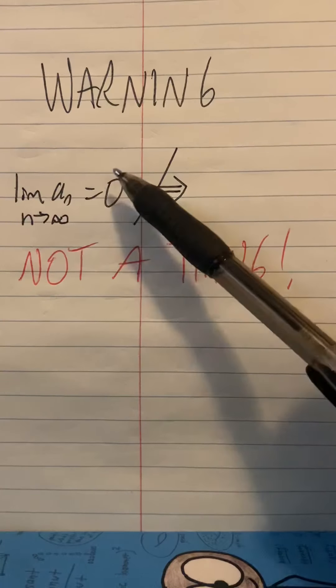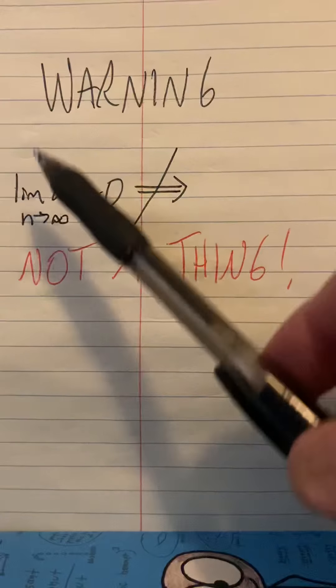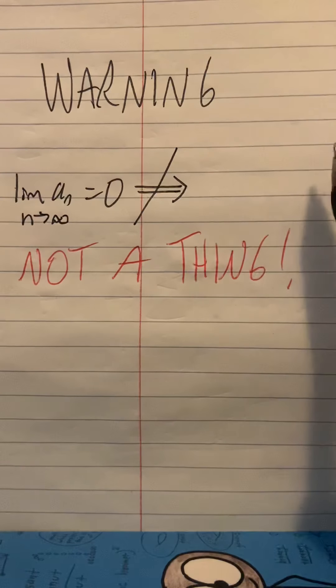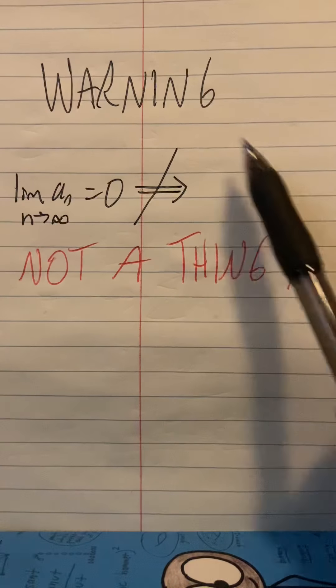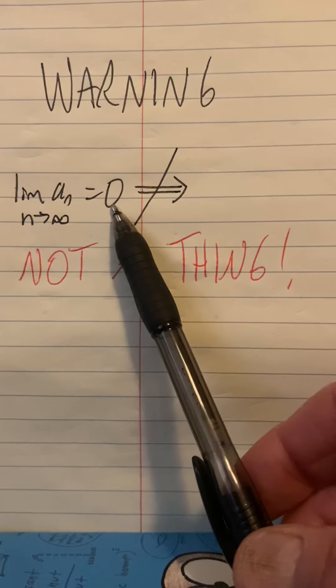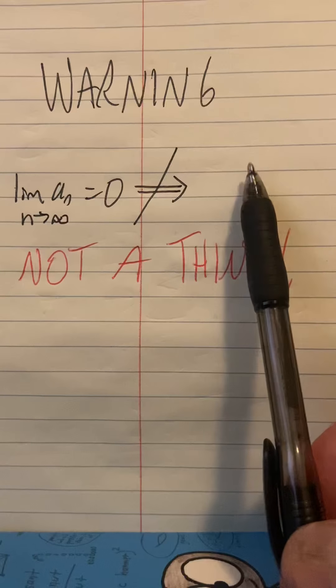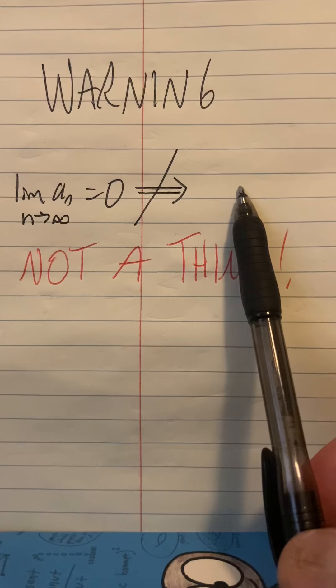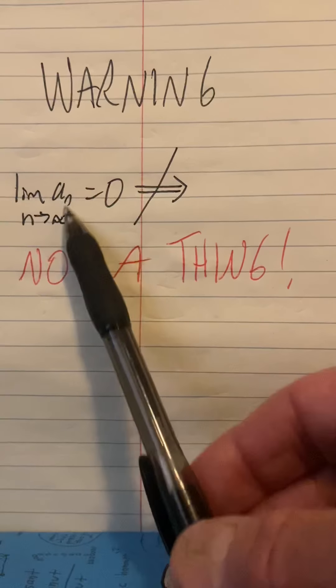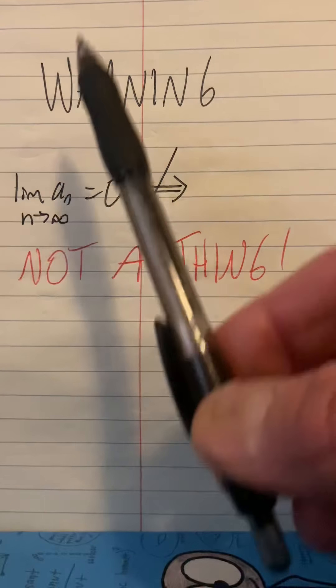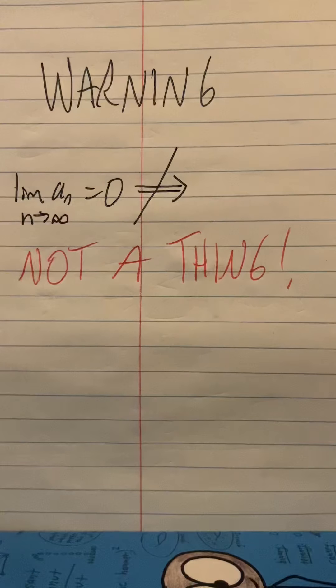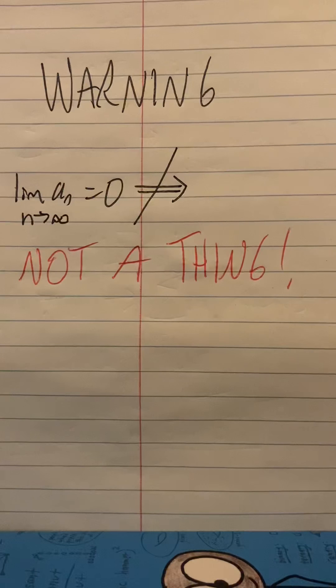But we're going to be going from the sequence to wanting to conclude about the series. And if the sequence's limit is zero as n goes to infinity, we haven't learned anything about this series. But if the limit of the sequence as n goes to infinity is not zero, then we have learned that the series is divergent. Hence, that's why it's called the divergence test. Success starts here at Temple College.